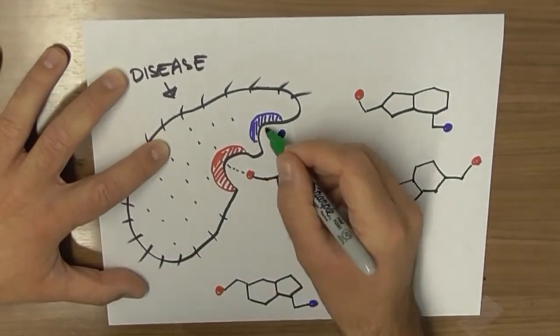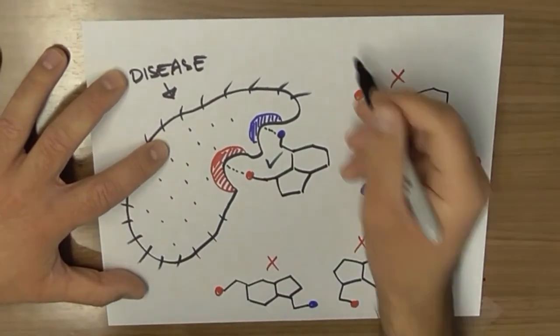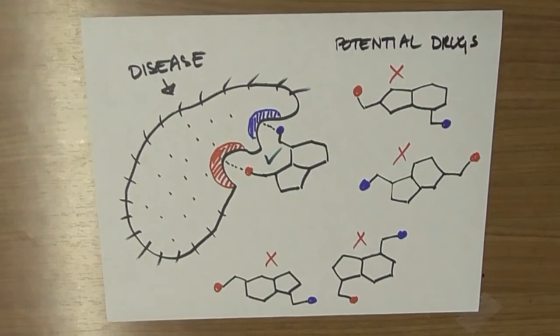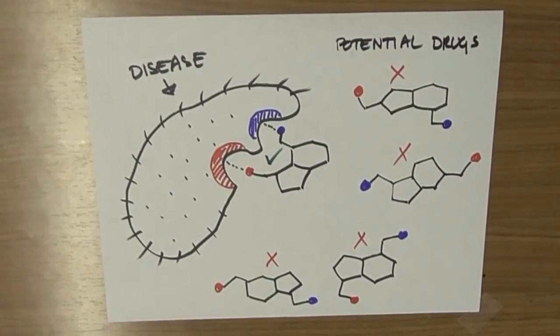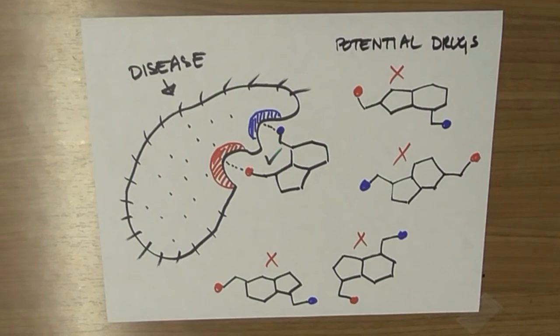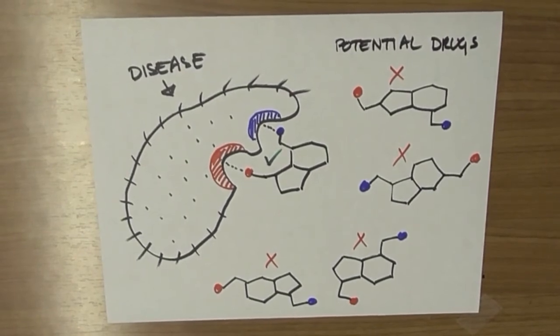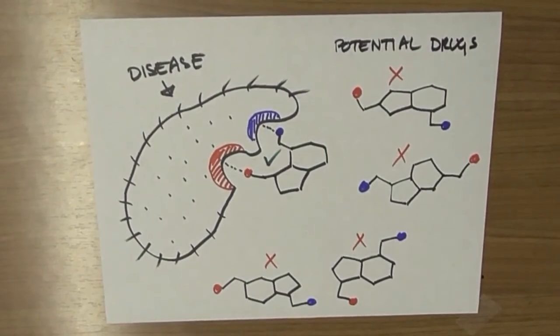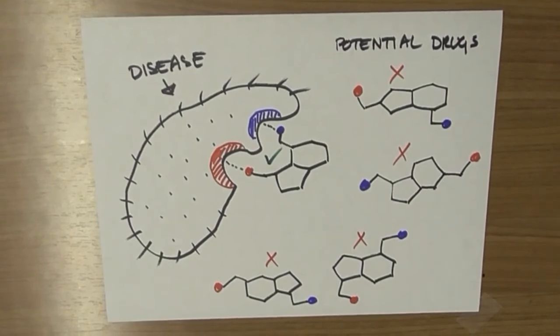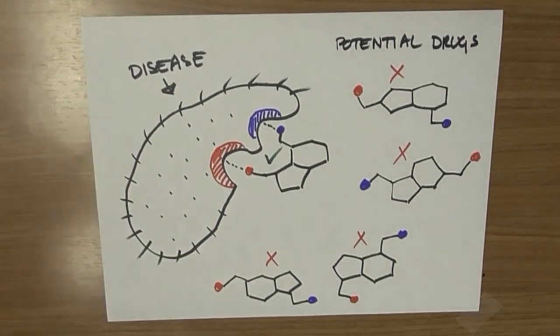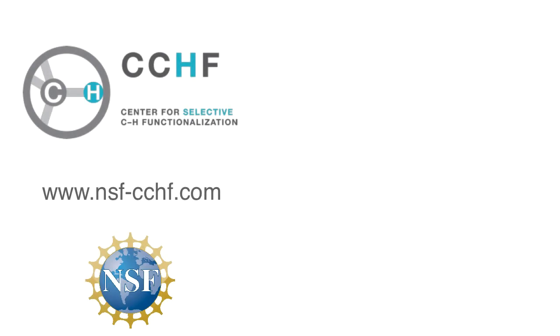So if we had a way to selectively install these atoms away from the functional groups, away from these pre-drilled holes in your plywood furniture, this would be incredibly powerful. And this is the grand challenge that the NSF Center for Chemical Innovation, Center for Selective CH Functionalization, is trying to achieve.